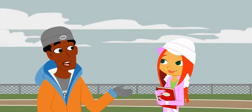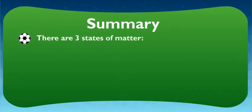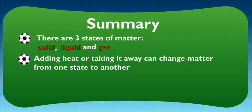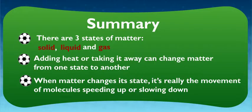All right, let me run through this for you. Tell me if I've got it right. There are three states of matter. Solid, liquid, and gas. Adding heat, or taking it away, can change matter from one state to another. When matter changes its state, it's really the movement of the molecules speeding up or slowing down. How'd I do?